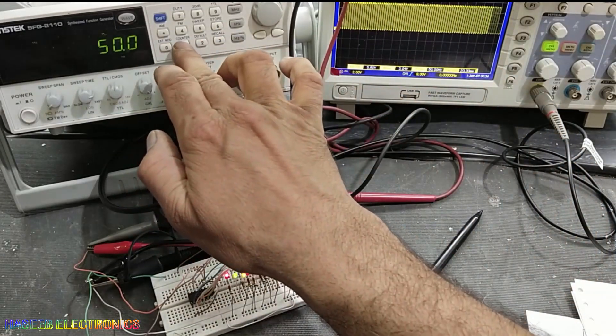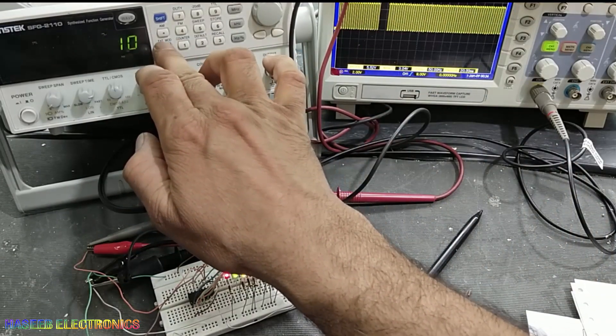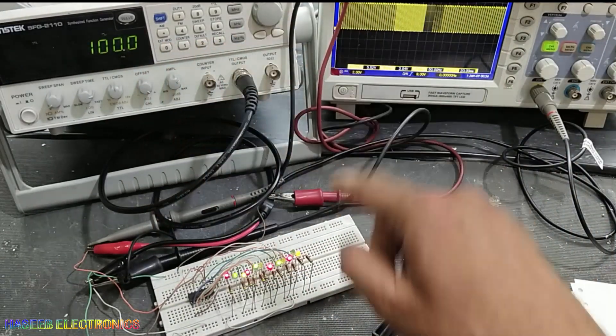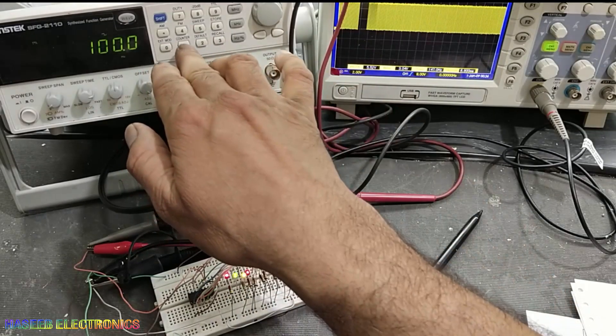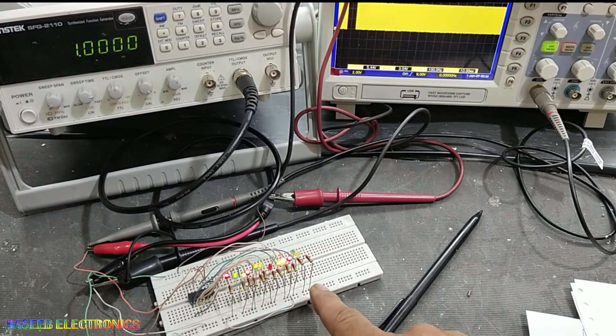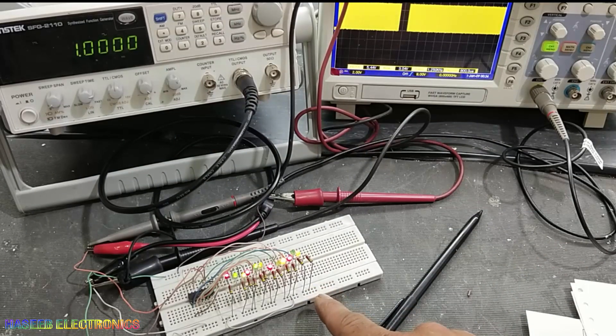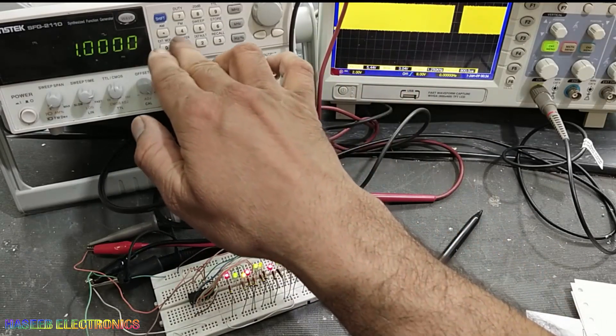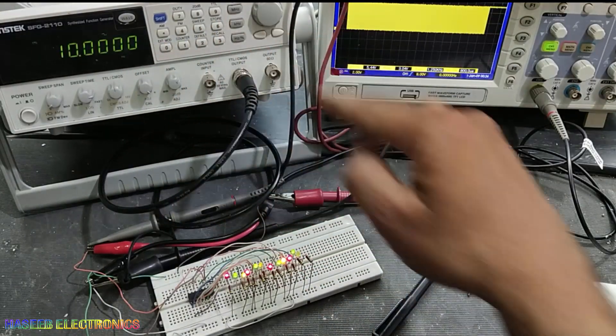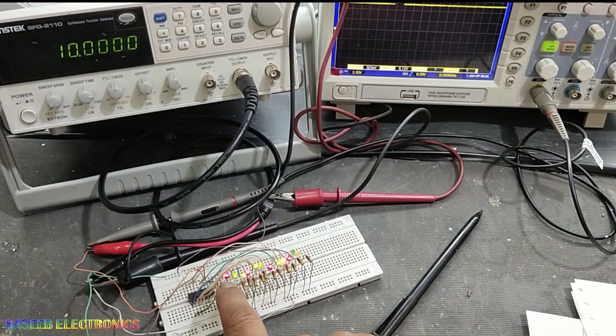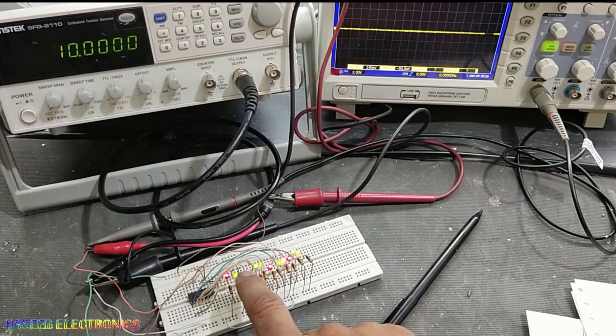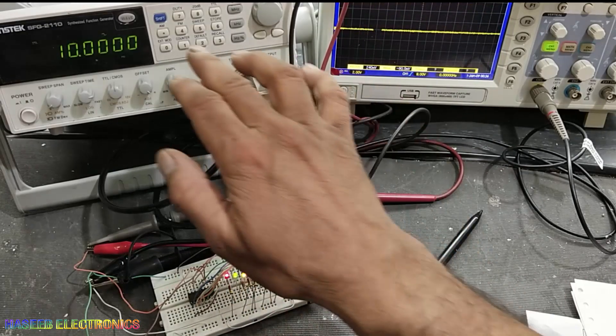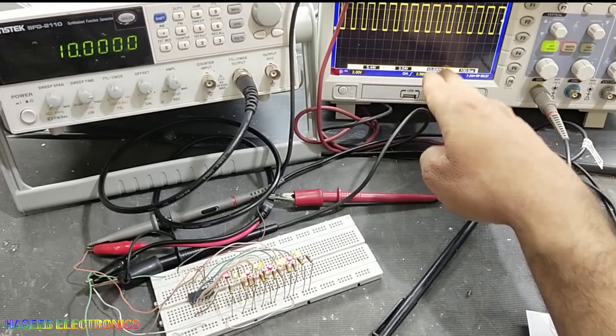If I put 100 hertz, its switching speed is more. At 1 kilohertz, it is very fast. At 10 kilohertz we can see, because it's switching very speedy, we cannot observe these lines. So it is 10 kilohertz.